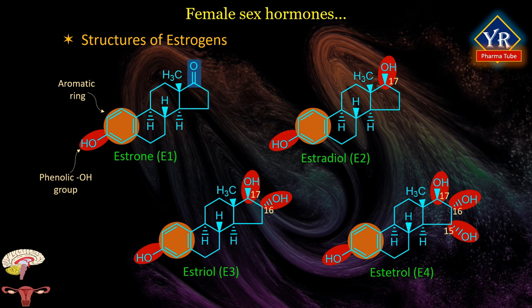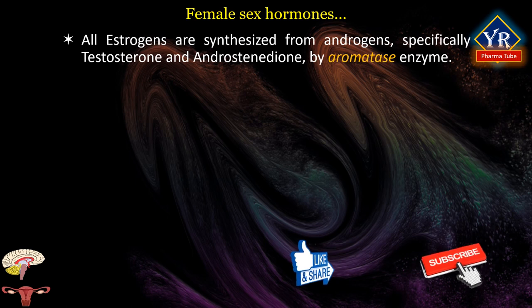Estradiol is about 10 times more potent than estrone and about 100 times more potent than estriol. Thus, estradiol is the most important estrogen in non-pregnant females between menarche and menopause. During pregnancy, this role shifts to estriol, and in post-menopausal women, estrone becomes the primary form of estrogen. Estetrol is produced only during pregnancy. All forms of estrogen are synthesized from androgens — specifically testosterone and androstenedione — by the enzyme aromatase.